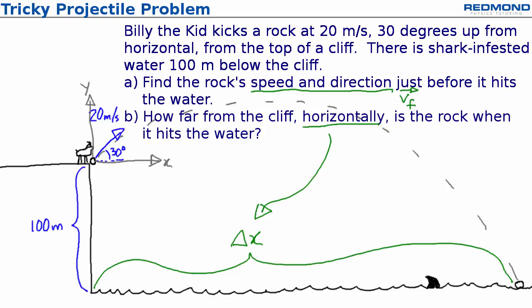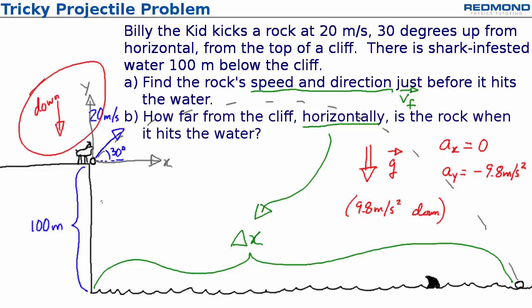With projectile motion, the only acceleration is caused by gravity and gravity acts down toward the center of the earth. This means that the horizontal acceleration is zero and vertical acceleration is 9.8 meters per second squared down. That's negative 9.8 meters per second squared along the y-axis because the direction down is negative along the y-axis.